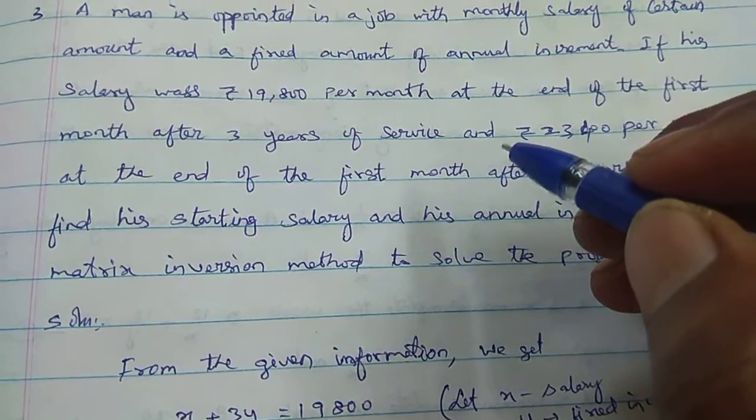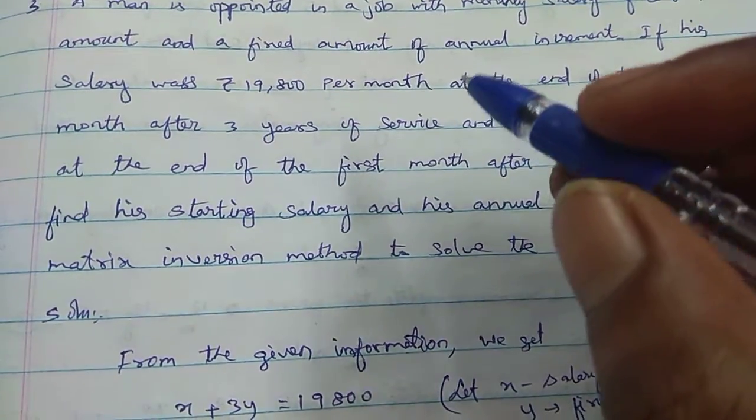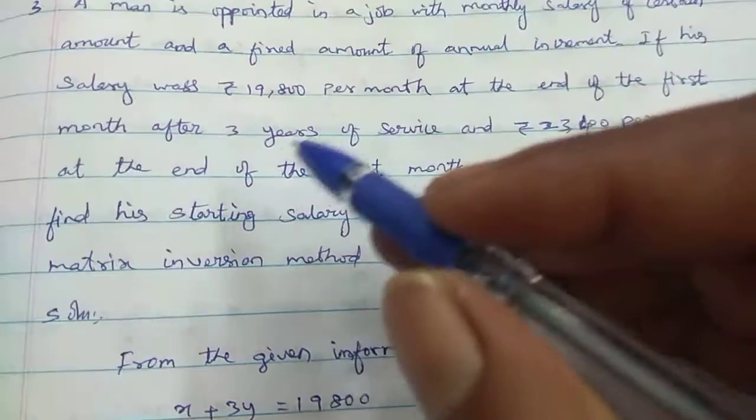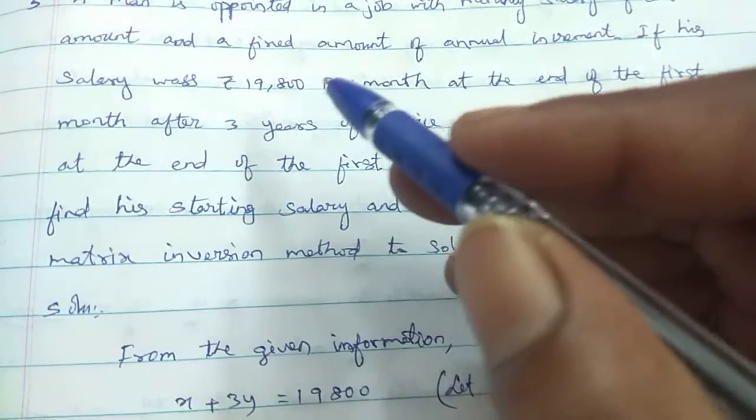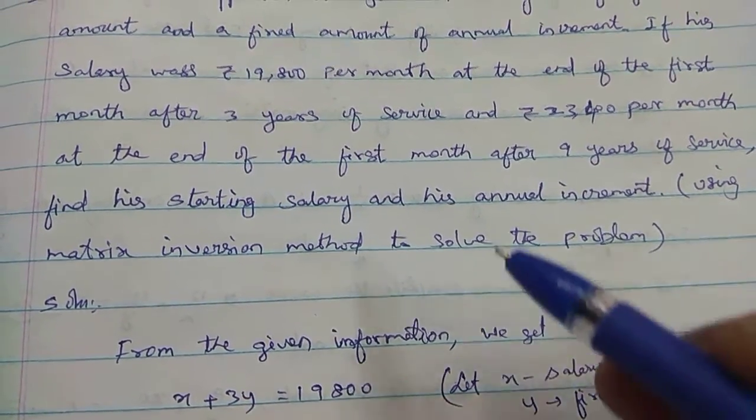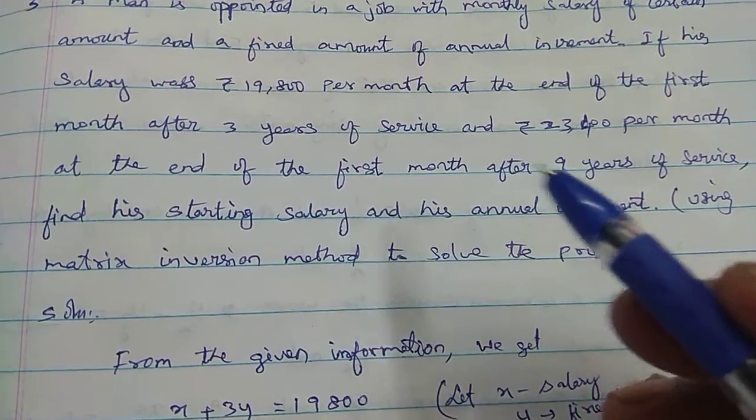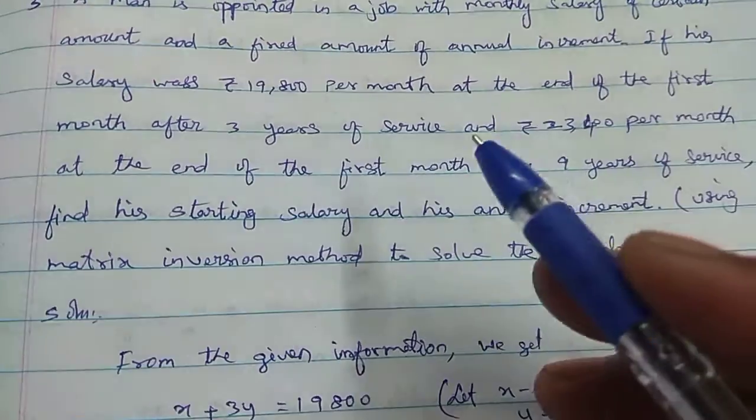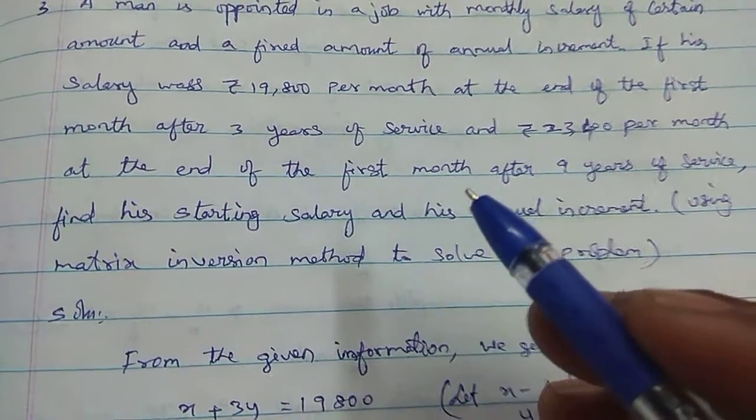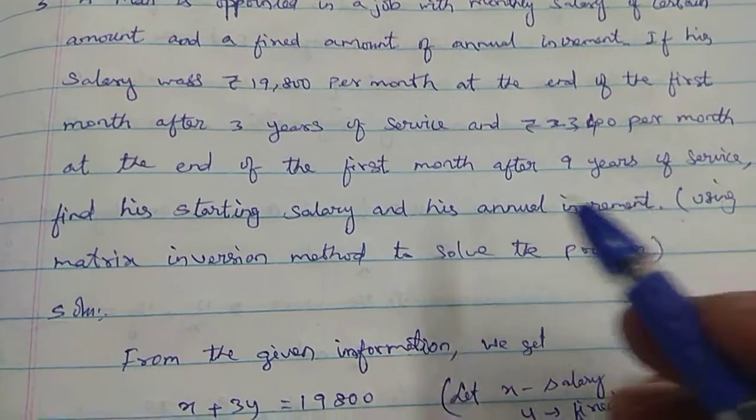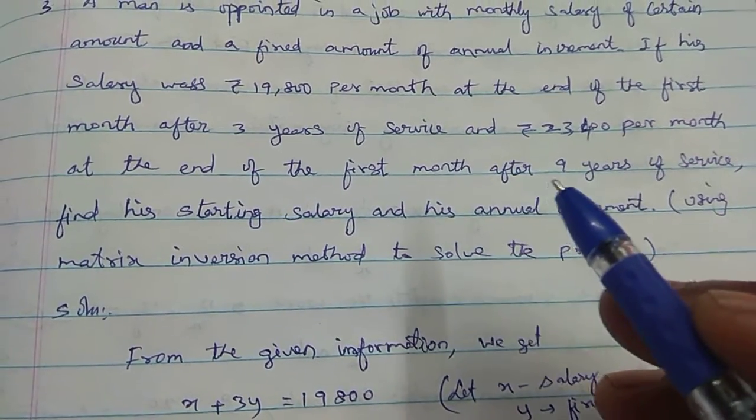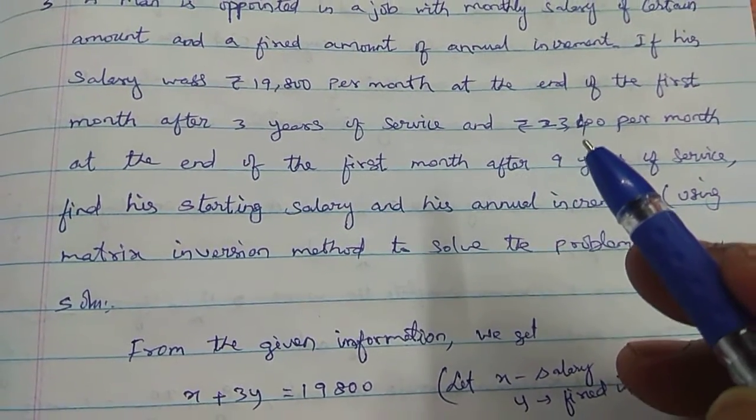Okay, now the first month is X and the end of the 3 years. Given that X plus 3Y equals 19,800 per month at the end of the first month after 9 years of service. Then X plus 9Y equals 23,400.